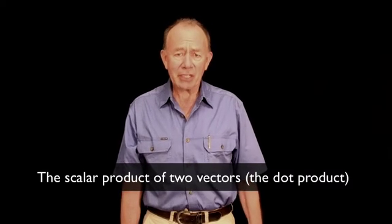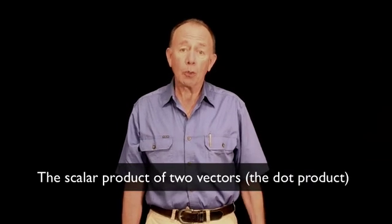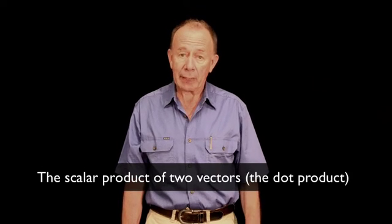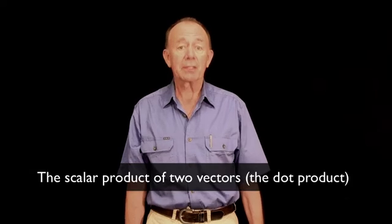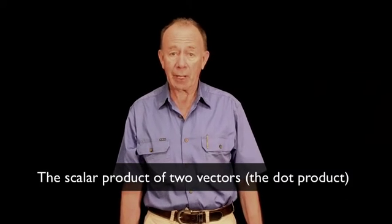Here we introduce the scalar product of two vectors, also known as the dot product. Later we'll introduce the vector product of two vectors, also known as the cross product.